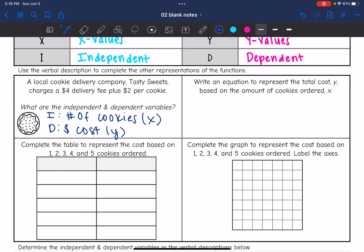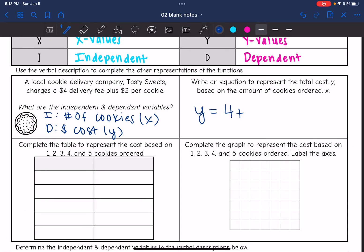And now it wants us to write an equation to represent the total cost Y based on the amount of cookies ordered X. So our total cost will be that $4 delivery fee, so $4 plus $2 per cookie, so 2X since we talked about how cookies were the independent or X values.